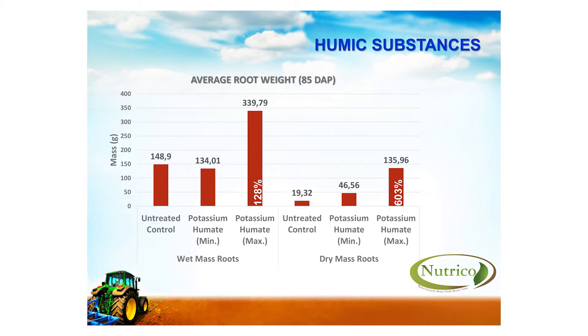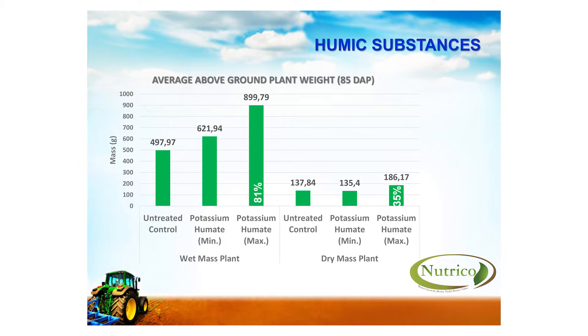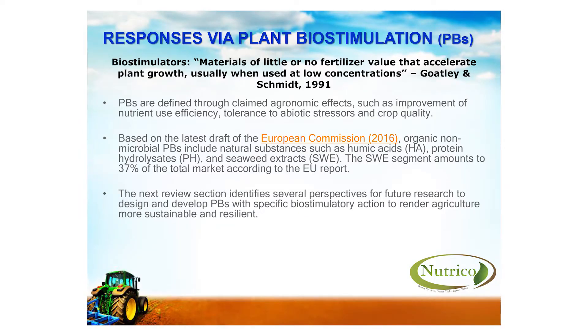The moisture absorption efficiency increased. The above-ground analysis showed an 81% wet basis weight increase compared to the untreated control, as you can see in the photos. When applying an organic substance like humic acid in a fertilized field — not just on maize but on any crop — we've seen similar activities and increases in nutrient use.